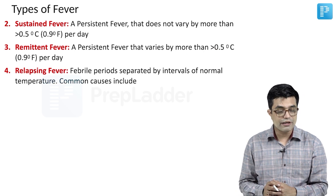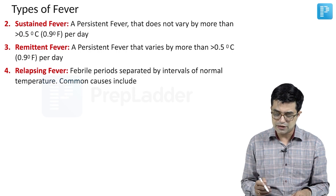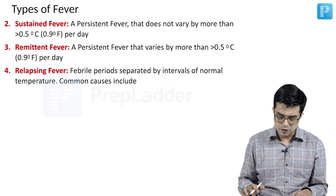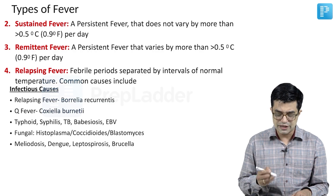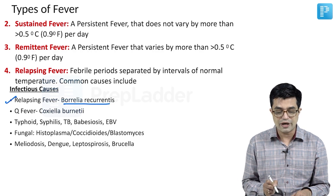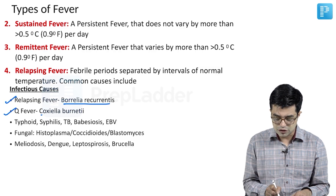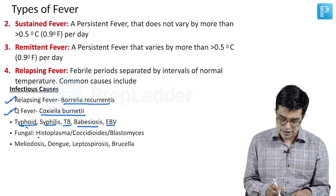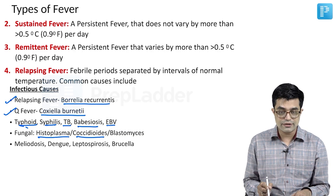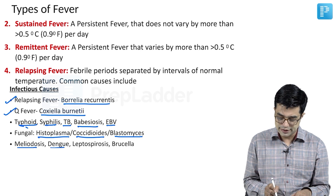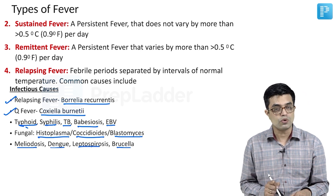Fourth is relapsing fever. There will be febrile periods separated by intervals of normal temperature and no specific pattern can be found. Common infectious causes, taken from Nelson's table, include relapsing fever caused by Borrelia recurrentis, Q fever caused by Coxiella burnetii, typhoid, syphilis, TB, babesiosis, Epstein-Barr virus, fungal causes like histoplasmosis, coccidioidomycosis, and blastomycosis. It can also be seen in melioidosis, dengue, leptospirosis, and brucellosis.